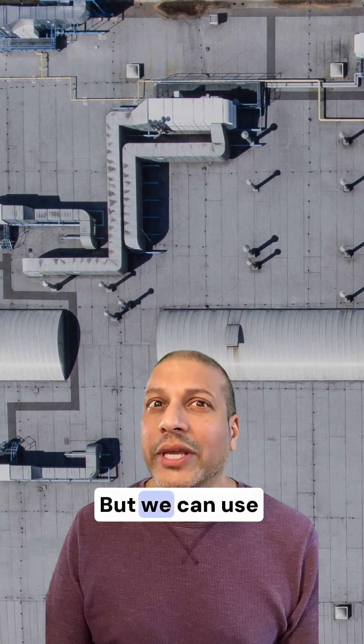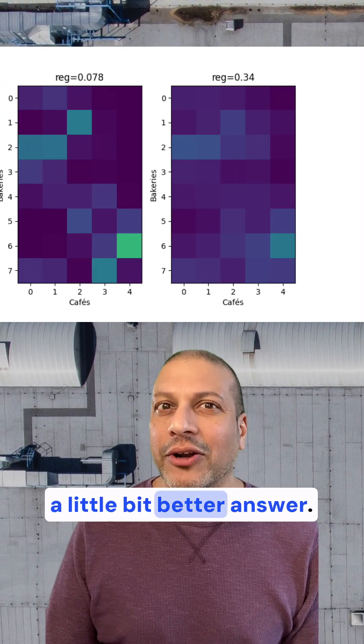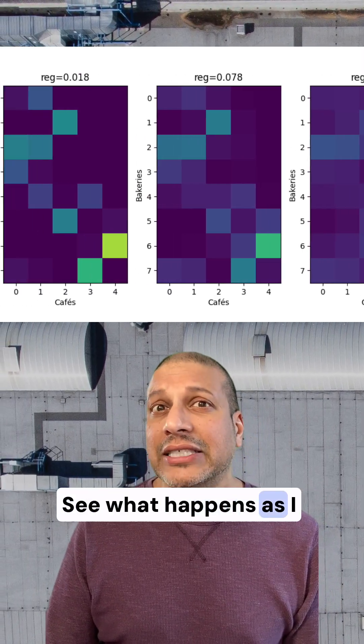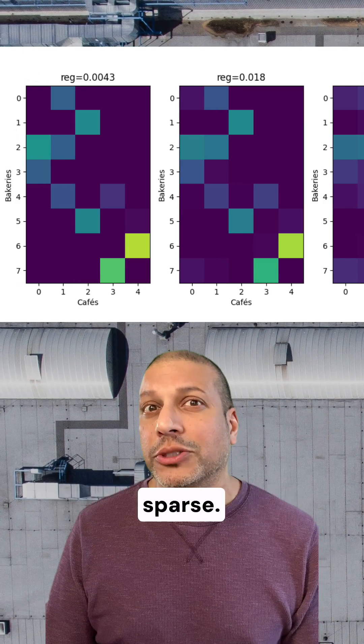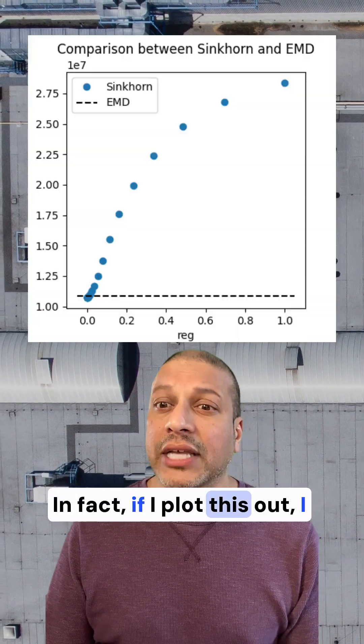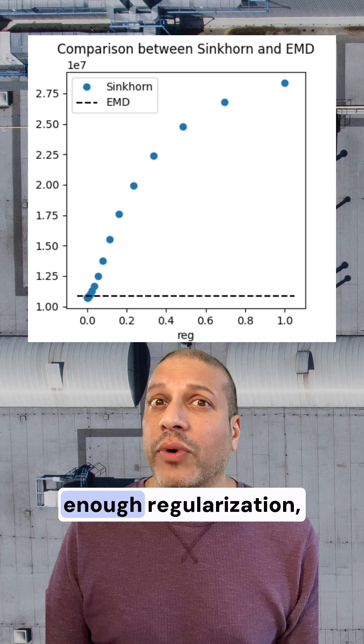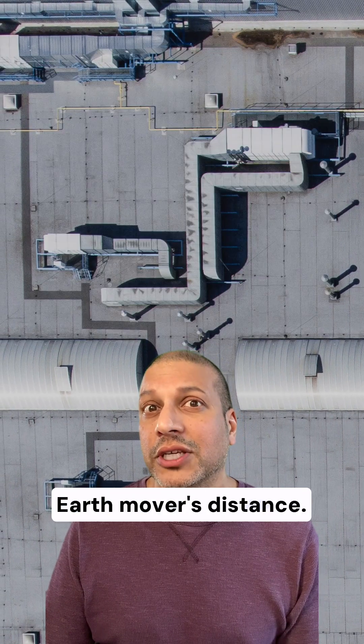But we can use regularization to make this a better answer. See what happens as I start adding more regularization? It gets more and more sparse. In fact, if I plot this out, I can see that by adding enough regularization, I get closer to the original earth movers distance.